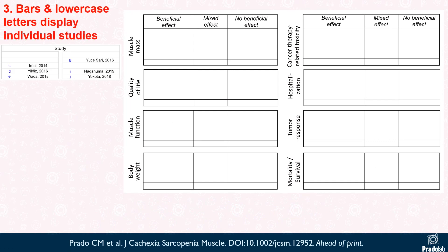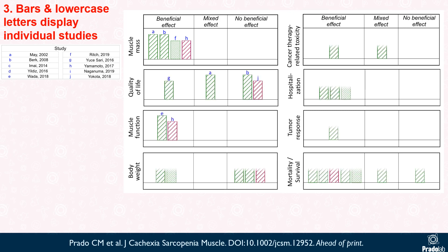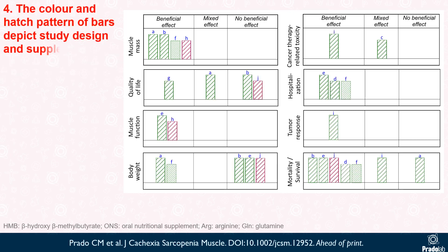In our harvest plots, bars and lowercase letters in blue depict individual studies included in the review. For example, study labelled as A refers to May et al. 2002, B as Burke et al. 2008, F as Rich et al. 2019, and H as Yamamoto et al. 2017. Furthermore, the color and hatch pattern of bars depict study design and supplement type, respectively.